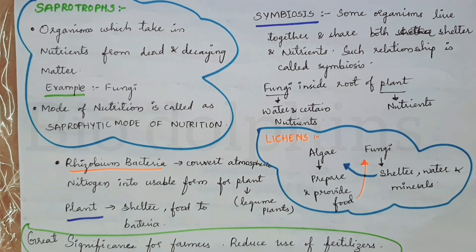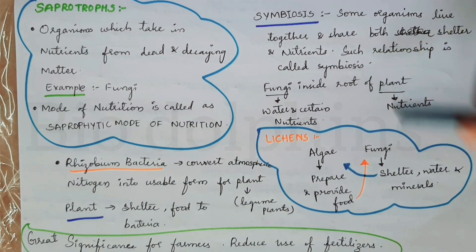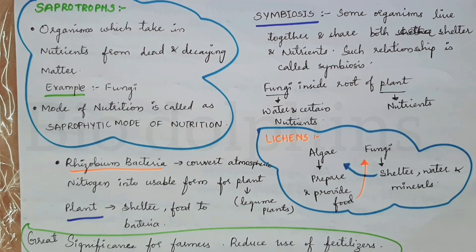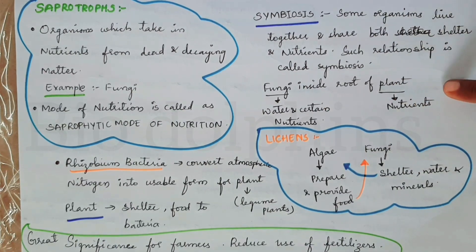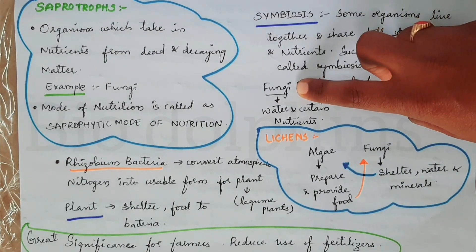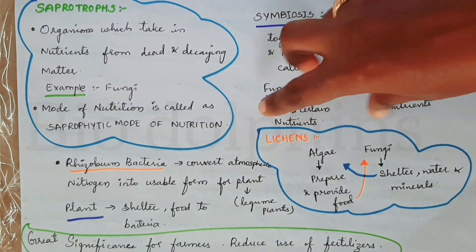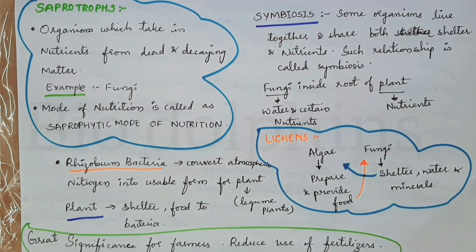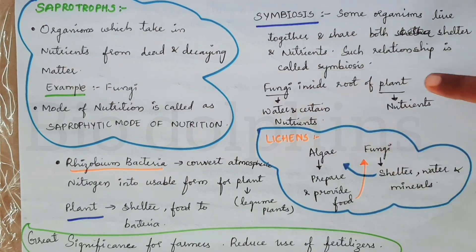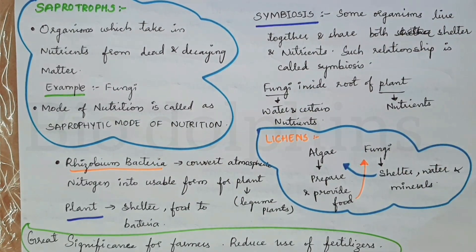Symbiosis is when organisms live in mutual understanding with each other. Such a relationship between organisms is called symbiosis. An example is fungi living inside the roots of a plant, where both have a mutual relationship.